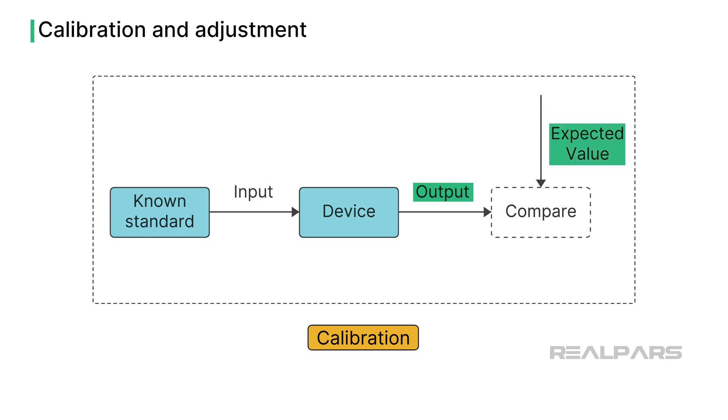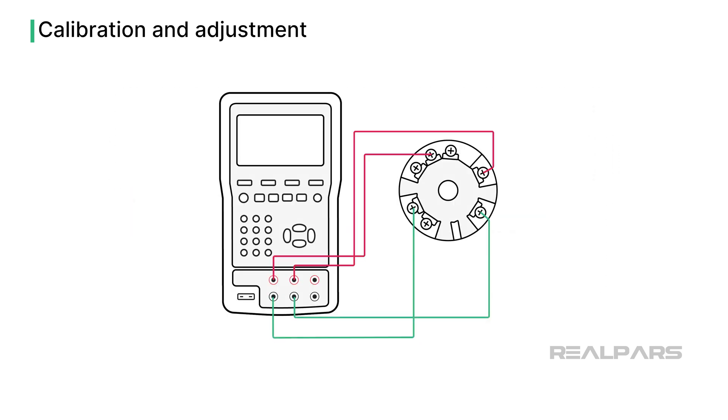We'll discuss known standards later in the video, but what if we discover that the transmitter output isn't accurate at the calibration conclusion? That's when we make adjustments to correct the error to an acceptable level.